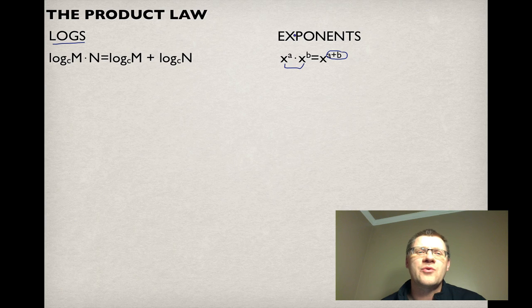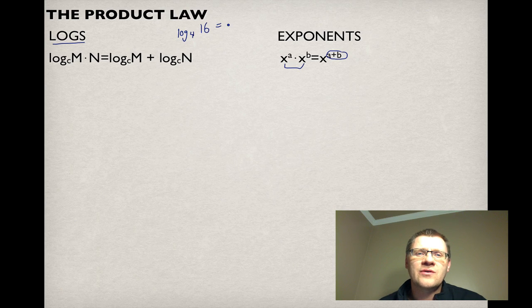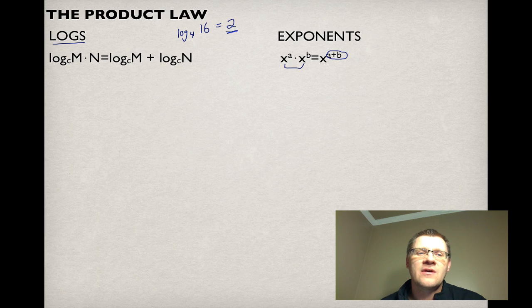This is how the exponent rules and the log rules are really the same thing. When we find log₄(16), the answer is 2, because our answer is always the exponent that goes on the base. These are two exponents, and the product rule says we add the exponents — so really the product law for logs and exponents is the same thing.